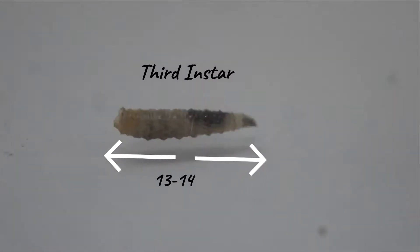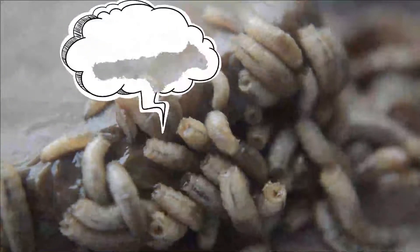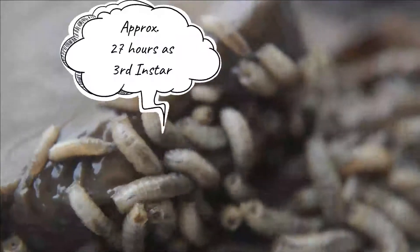will continue to feed and grow, reaching 13 to 14 millimeters in length with three slits at their posterior spiracle. They will spend at least 27 hours as their third instar.